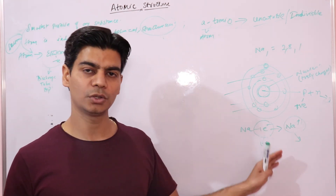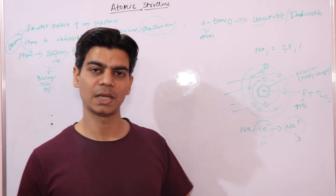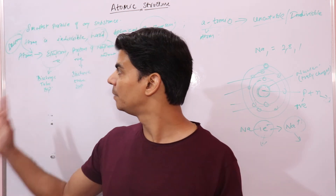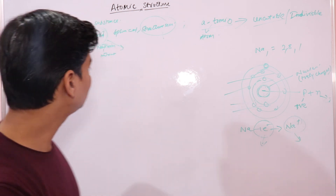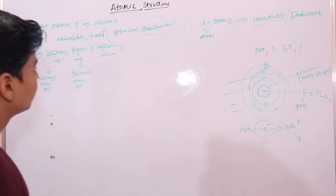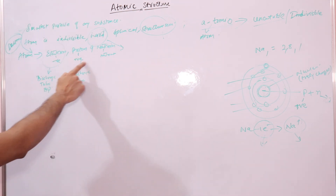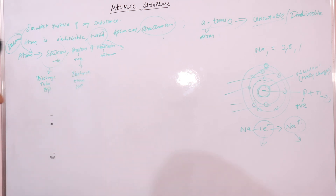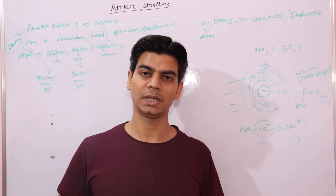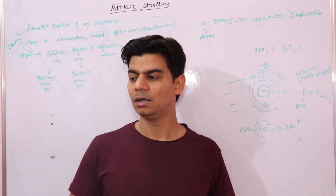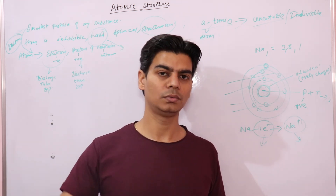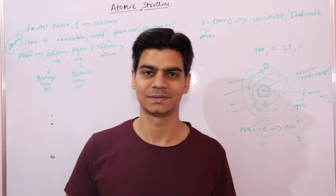In future lectures, we will continue with the discovery of electrons, protons, and the Rutherford experiment. For this lecture, just remember that atom was considered the smallest particle but that was later proved wrong, and atom consists of electrons, protons, and neutrons. If you have not subscribed, please subscribe to the channel — I will be covering the entire 11th and 12th chemistry and then move on to graduation and post-graduation chemistry as well.